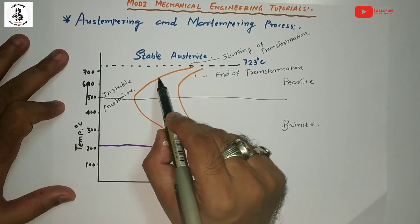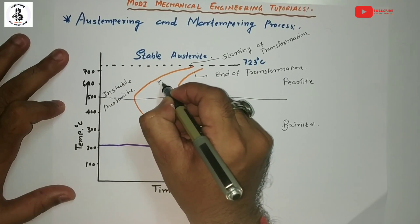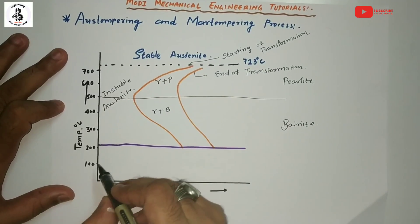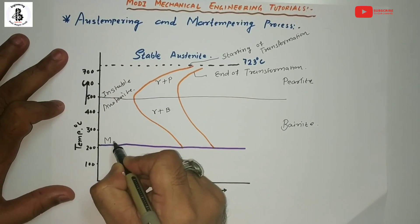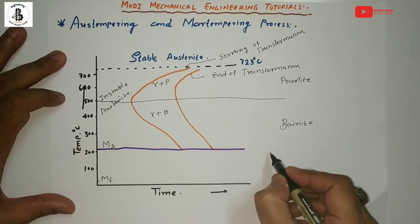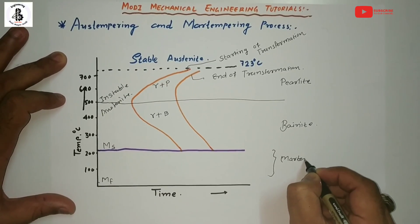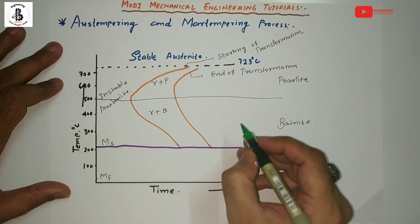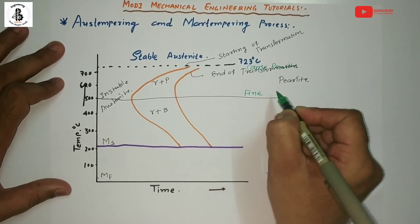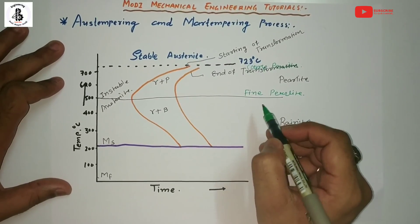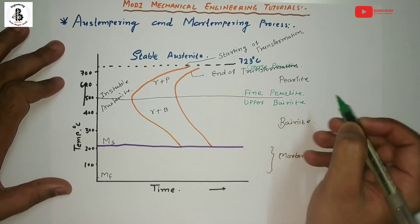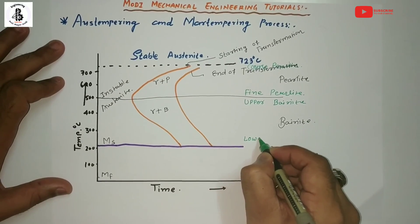In between the transformation start line and finish line, it will be gamma austenite plus pearlite, and here gamma austenite plus bainite. From the TTT diagram, there is a line representing the start of martensite, and up to another line it will be the finishing of martensite structure. At the upper temperature region it will be coarse pearlite, then fine pearlite, then upper bainite, and just above the martensite start line that will be lower bainite.